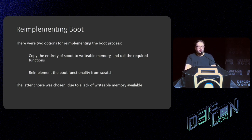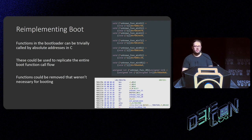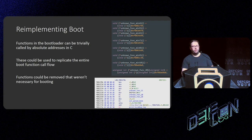There were two options for reimplementing the boot process: copy the entirety of working memory from the bootloader and modify it, or re-implement the boot functionality from scratch, calling in functions needed for hardware setup, the TEE, etc. I chose the latter because it would be easier to debug and there was a lack of writable memory. Functions in the bootloader could be called by absolute addresses in C — you can literally say 'I want to call a function at this address' and give it parameters. This let me load in functions, check things that didn't work, change parameters, or remove functionality I didn't need. I could cut everything down to the bare bones of a boot process.